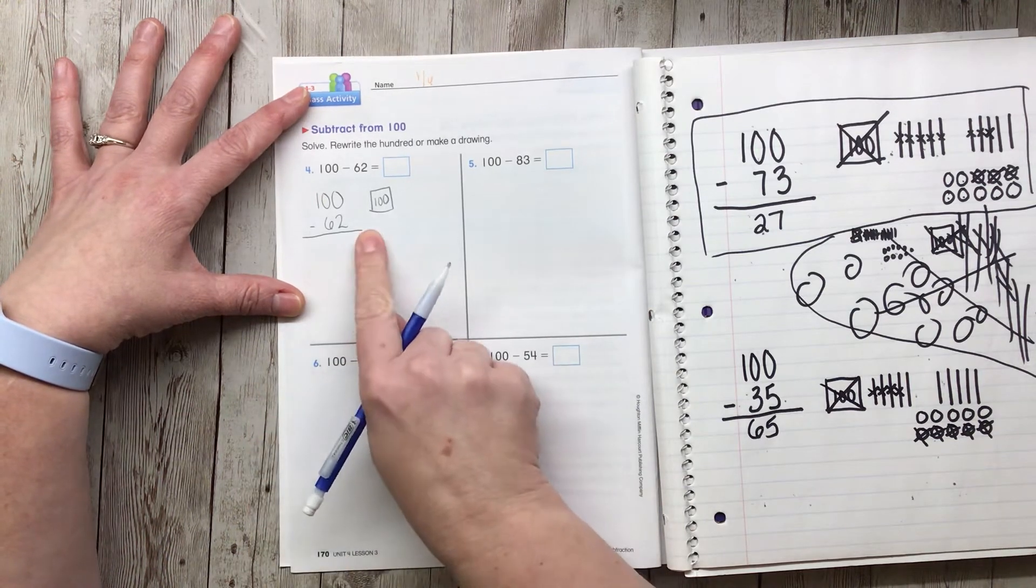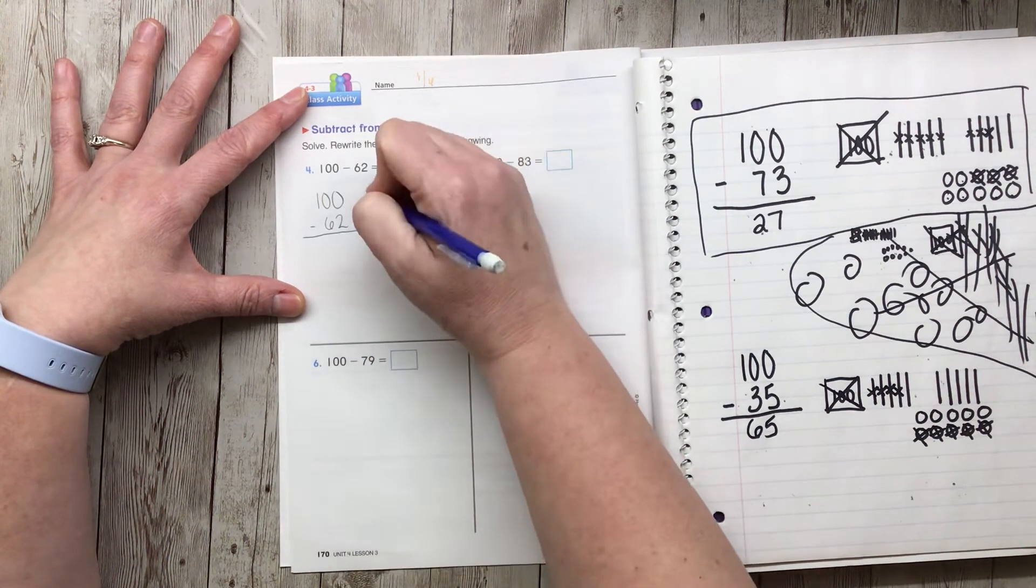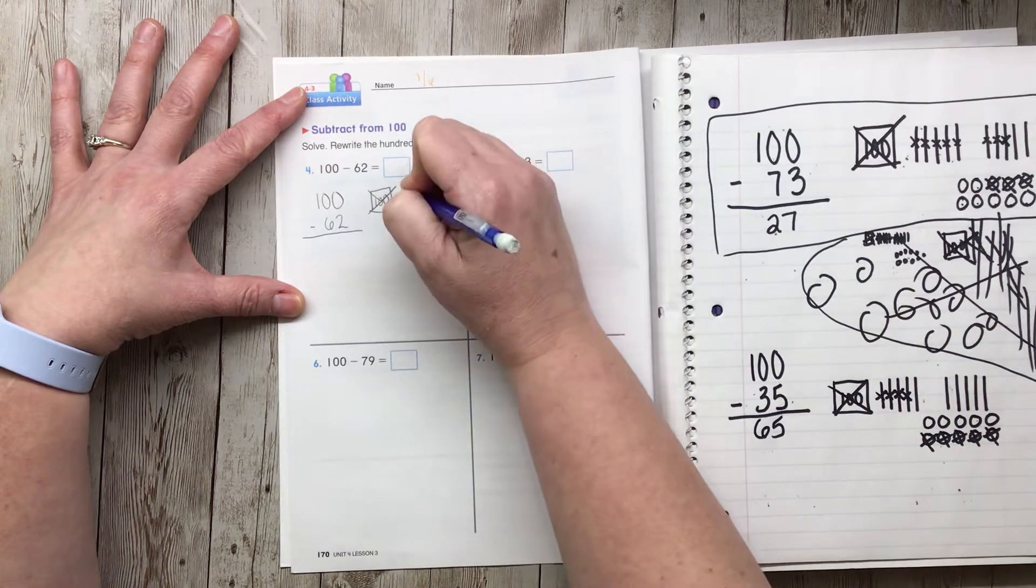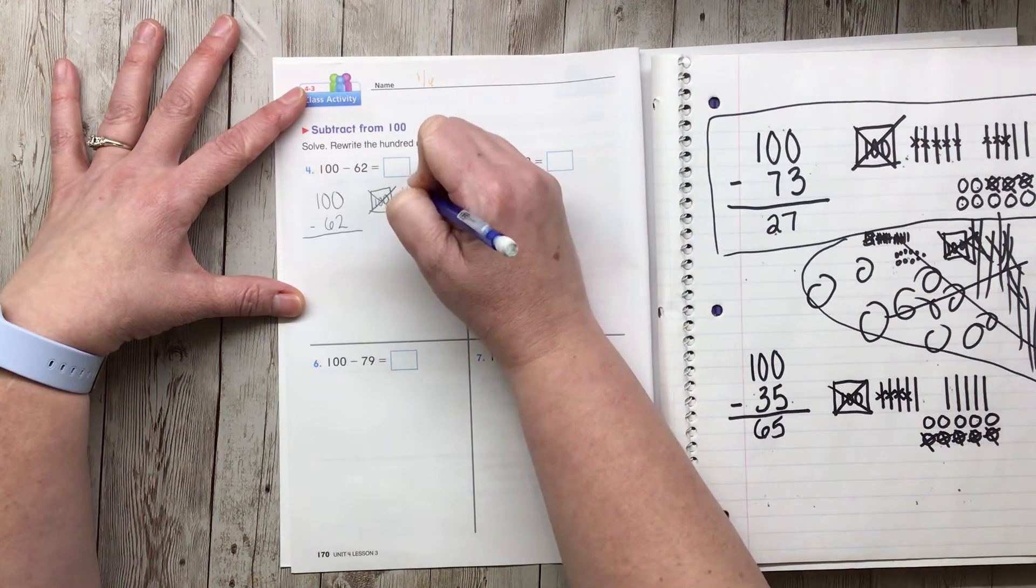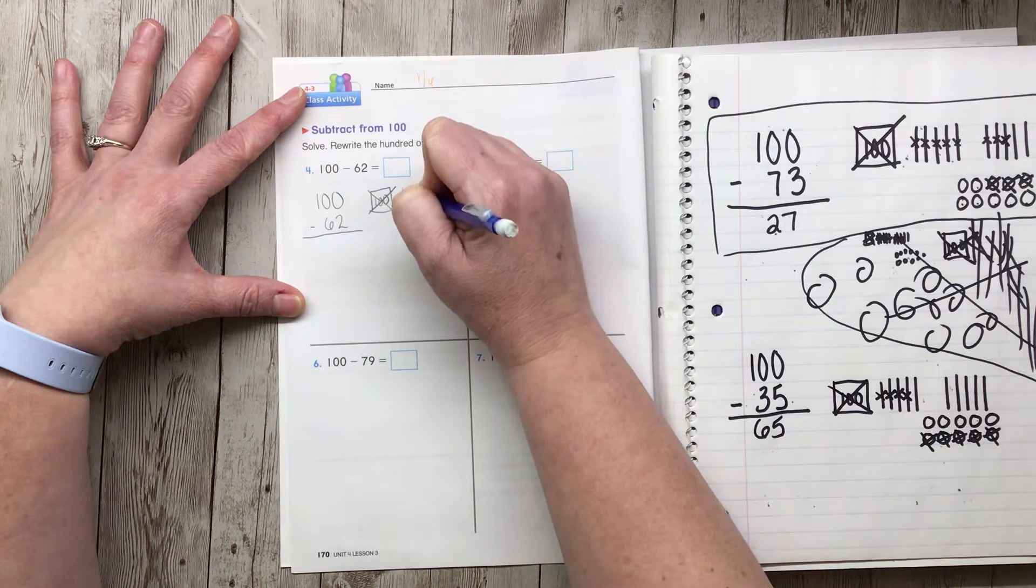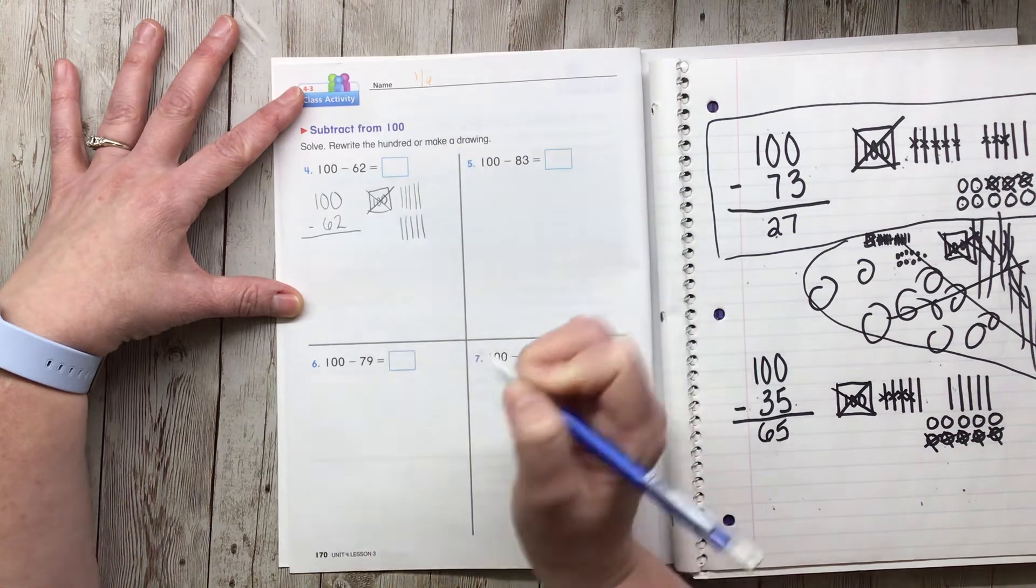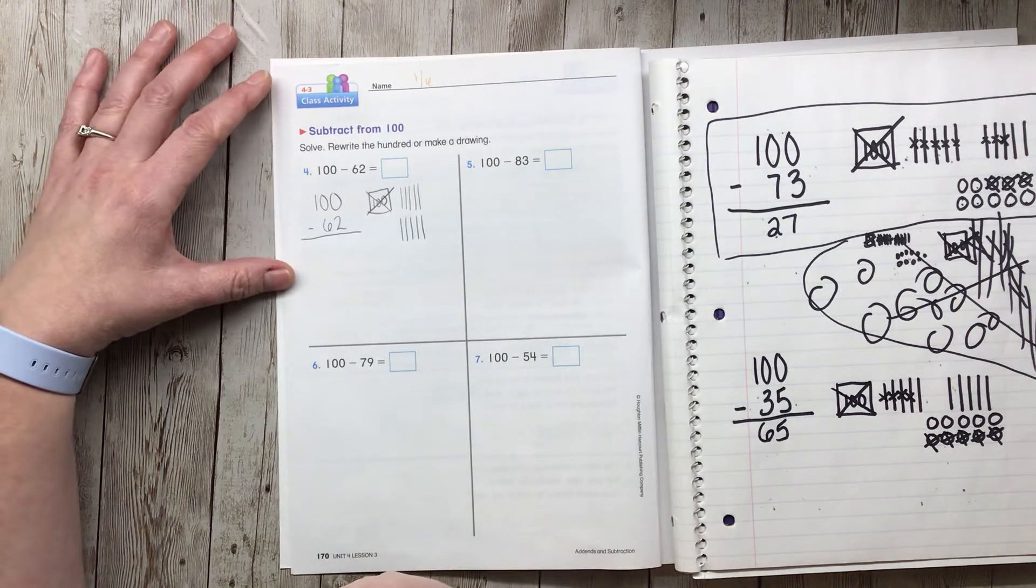We cannot take 62 out of 100 without breaking it apart. So I'm going to put an X through that and draw 10 ten sticks. We're working on making these nice and neat so that we can read our drawings and other people can as well.